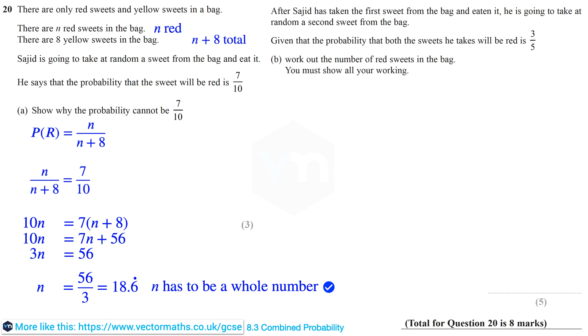Now after Sajid has taken the first sweet from the bag and eaten it, he's going to take at random a second sweet from the bag. Now we're given that the probability that both the sweets he takes will be red is 3 fifths. And in part B we need to work out the number of red sweets in the bag, showing all our working.